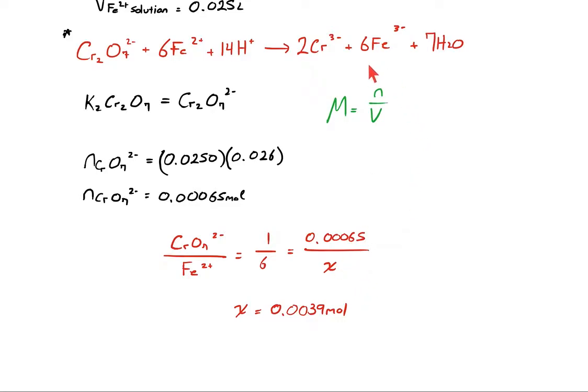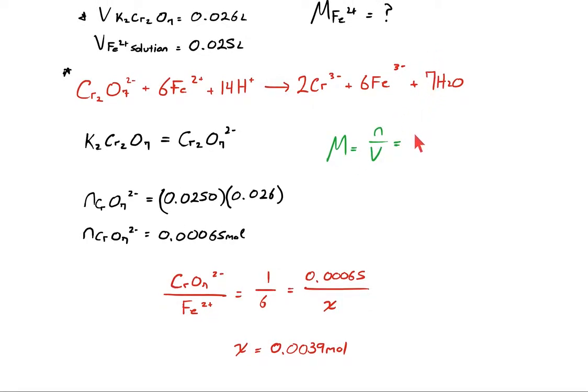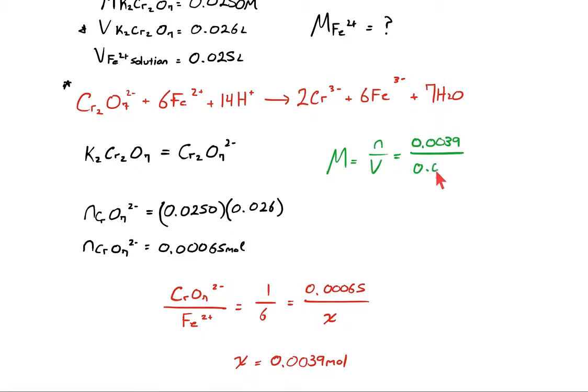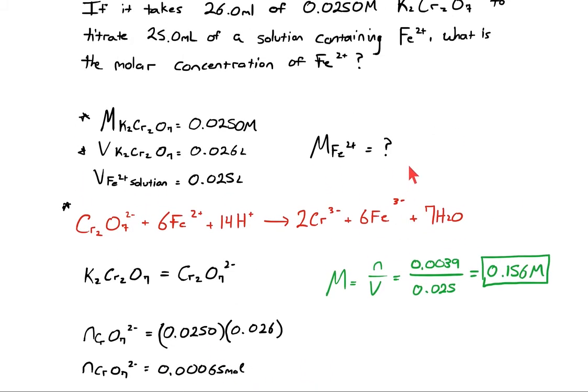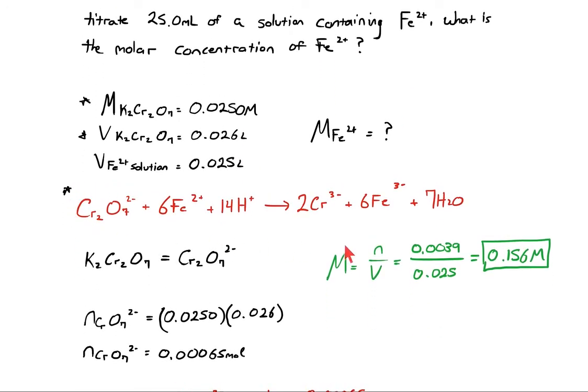Let's go right back up here and plug that into the definition of molarity for the iron ion in its solution: 0.0039 moles of iron ions in 0.025 liters of its solution. This quotient is 0.156. That's 0.156 molar, the concentration of iron ions in the solution it came from in the reaction described by this net ionic equation.